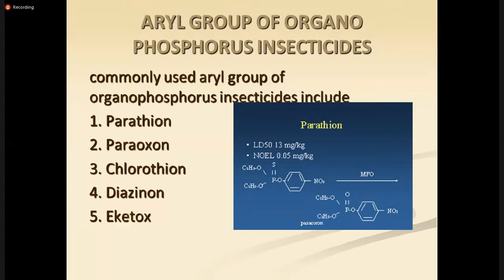The organophosphorus compound is also classified according to its toxicity. The previous classification was according to chemical structure. Now the classification according to toxicity: mildly toxic means the organophosphorus compound has a fatal dose of more than 25 grams. Examples of mildly toxic are those compounds used normally as household insecticides, such as chlorothion and malathion.